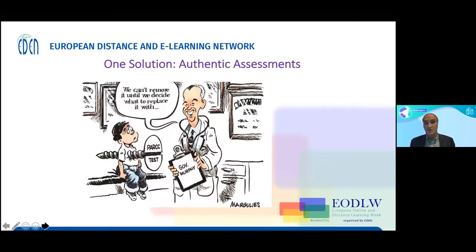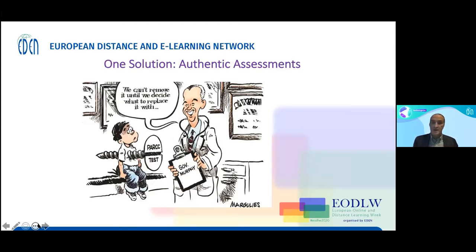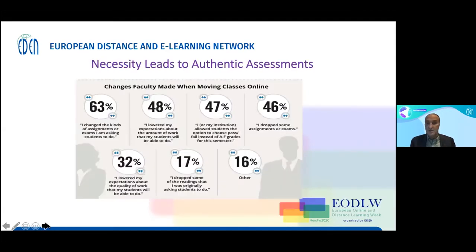This cartoon shows a doctor saying, 'We can't remove it until we decide what to replace it with' — and that's what we're faced with at Stuttgart University. Everybody knows they want to do something different from standardized testing. The typical university test is a paper and exam at the end of term — that's how you show you've learned something after 16 weeks. Everybody knows that final assessment, for hygiene and safety reasons, can't be done anymore. So what do we replace it with?